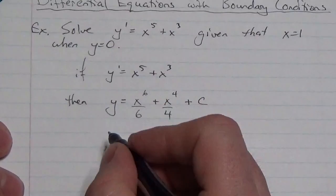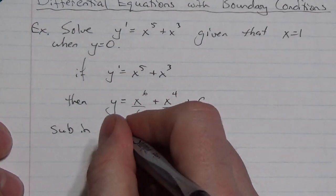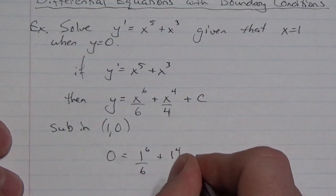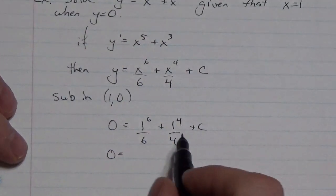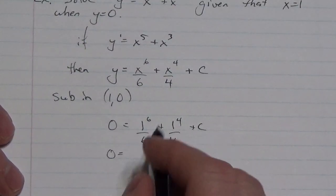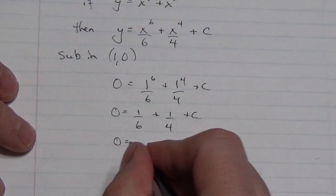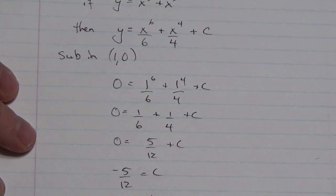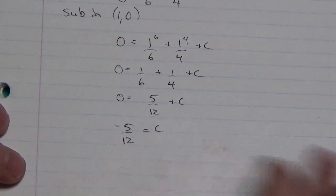Now, we know that this function here, this is y equals. So this particular function will satisfy this equation. But we've got a little bit more information than that. We also know that it's going to go through the point (1,0). So, additionally, once we've got this, we're going to sub in the point here. When we do that, we get that 0 = 1^6/6 + 1^4/4 + c. This simplifies down to 1/6 + 1/4 + c, which is 5/12 + c. So, negative 5/12 is equal to c.